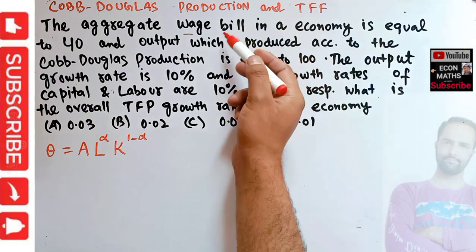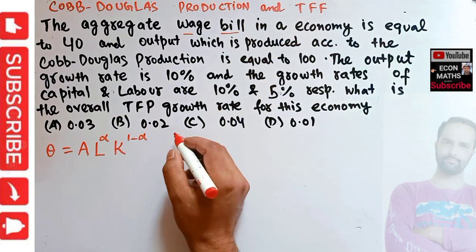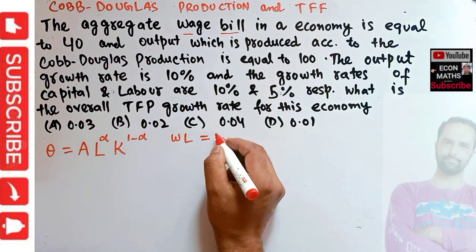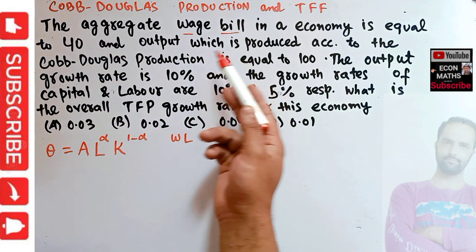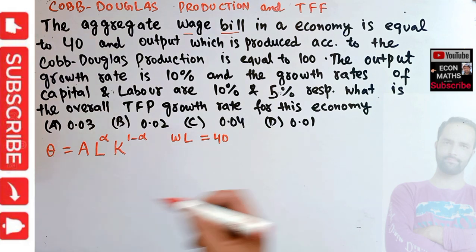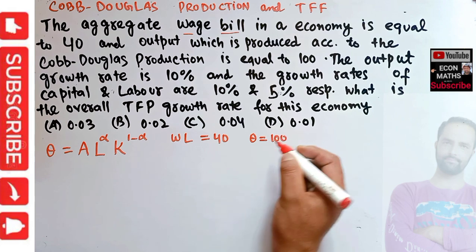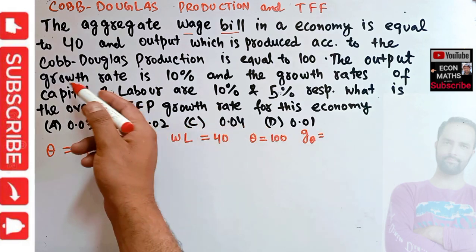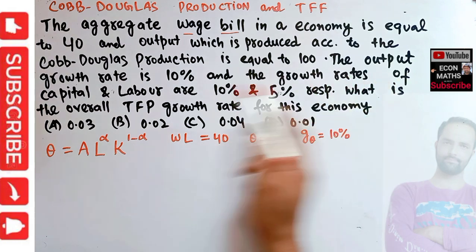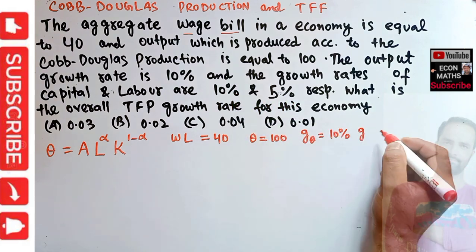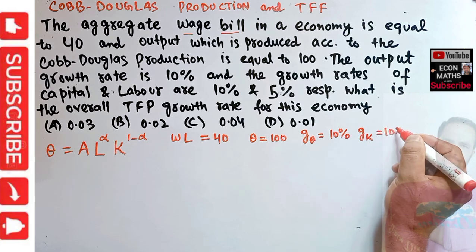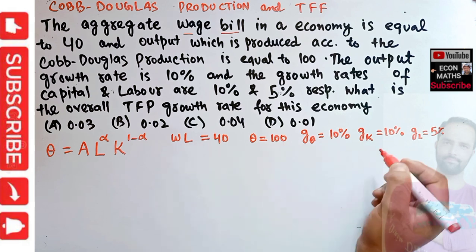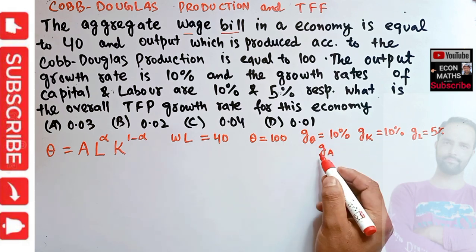What we are being given here: we are given the wage bill in this economy. The total wage bill equals W times units of labor employed, and it is given as 40. Also, we are told output Q is equal to 100. The output growth rate G_Q is 10 percent. The growth rate of capital is 10 percent and the growth rate of labor is 5 percent. We need to find out the growth rate of total factor productivity, denoted G_A.